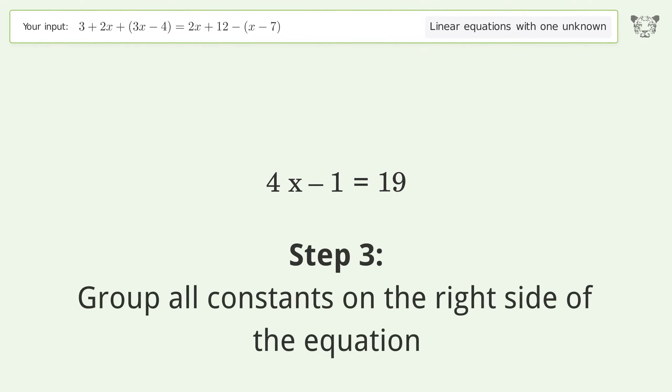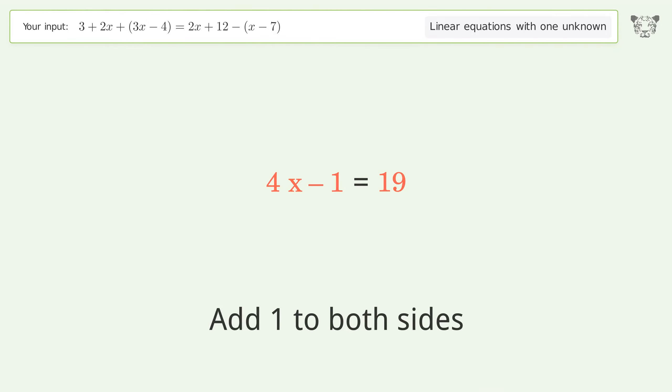Group all constants on the right side of the equation. Add one to both sides. Simplify the arithmetic.